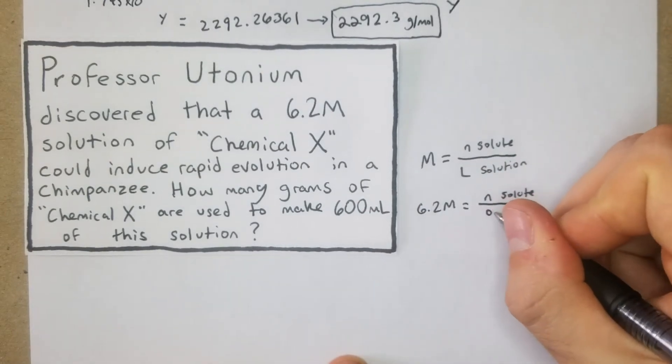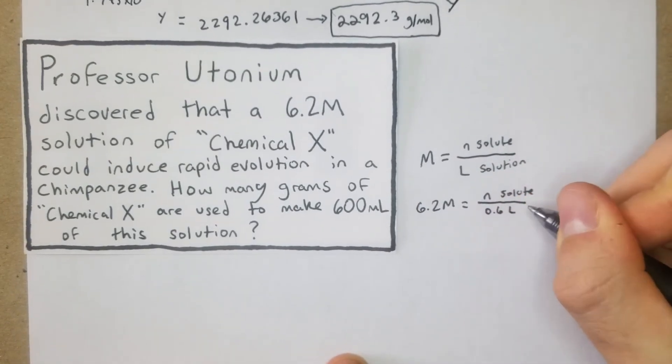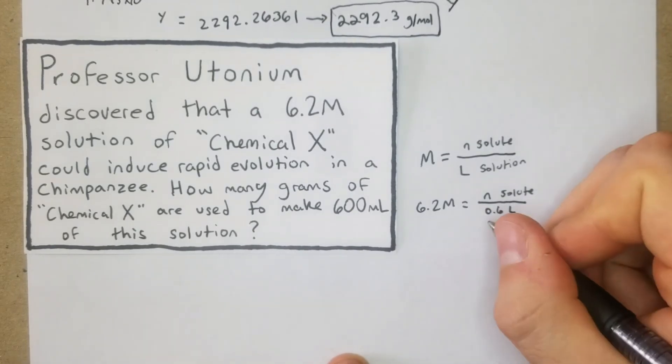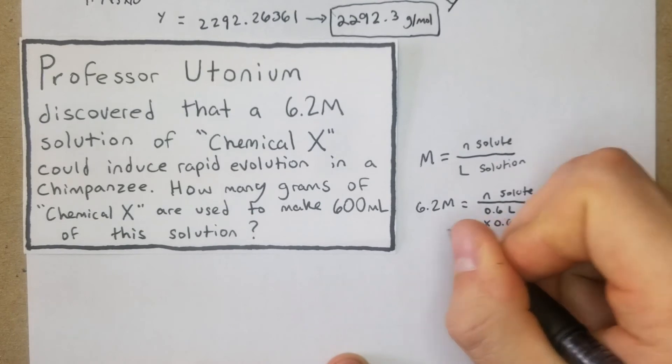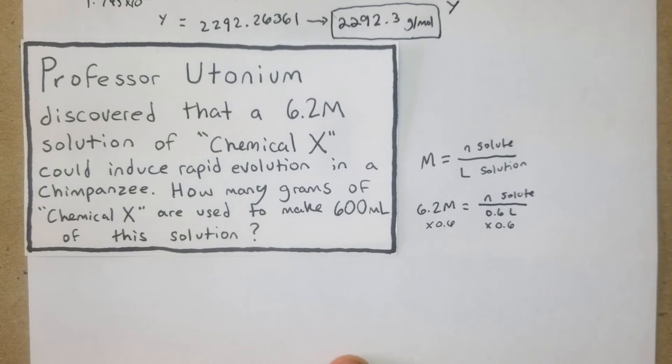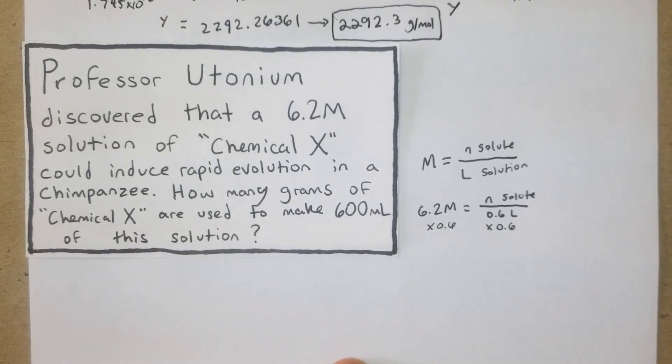From there we can just solve - multiply both sides by 0.6. 6.2 times 0.6 equals 3.72, so n equals 3.72.